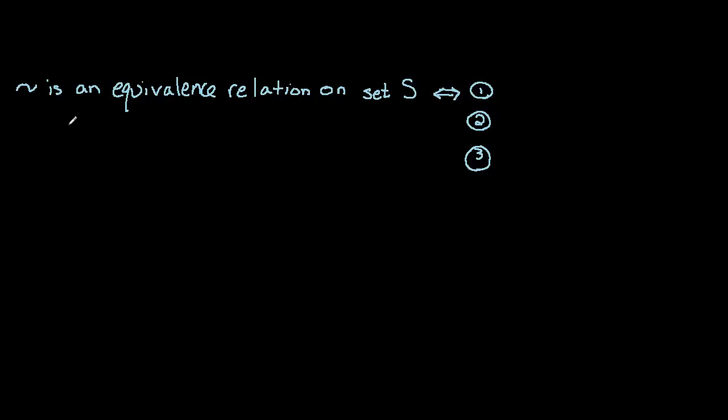In this video we're going to talk about equivalence relations and partitions. So we begin with a definition that twiddle is an equivalence relation on set S if the following three conditions hold. And just to be clear what we mean, if A and B are elements of S we say A twiddles B. And so this relation twiddle is an equivalence relation if and only if the following three conditions hold.